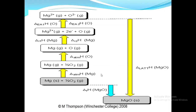For the development of the Born-Haber cycle, you can see here I have developed the Born-Haber cycle. There are two types of arrows within the diagram: the blue arrow depicting the direct path, while the yellow arrows are depicting the indirect path.